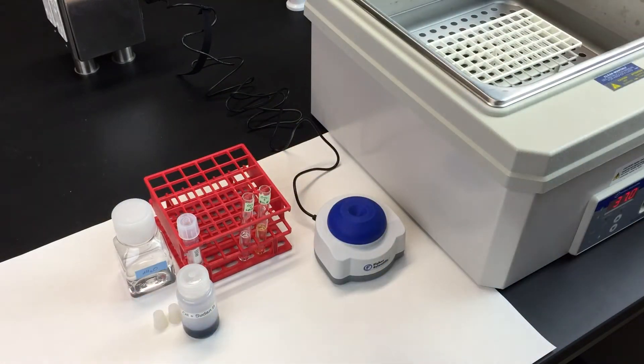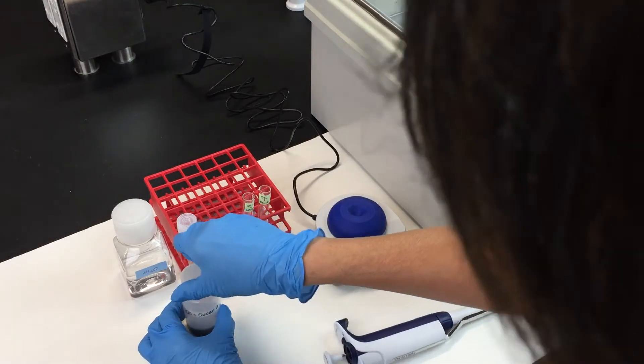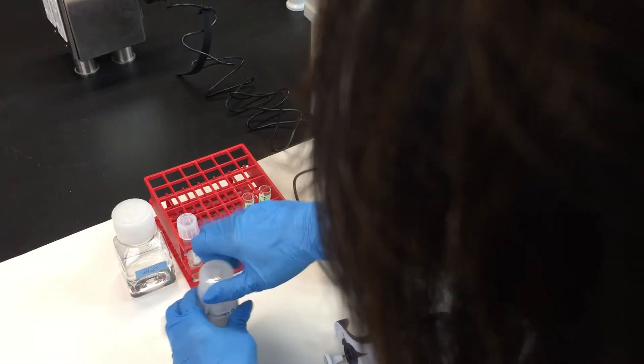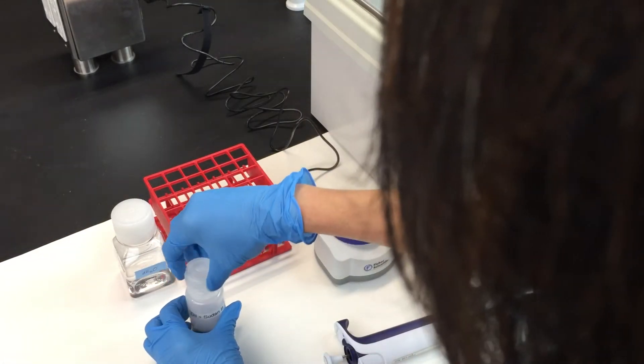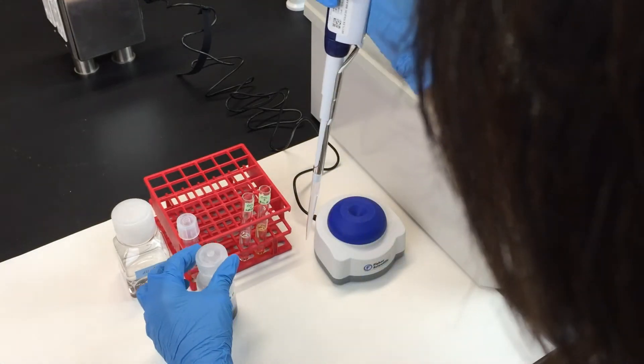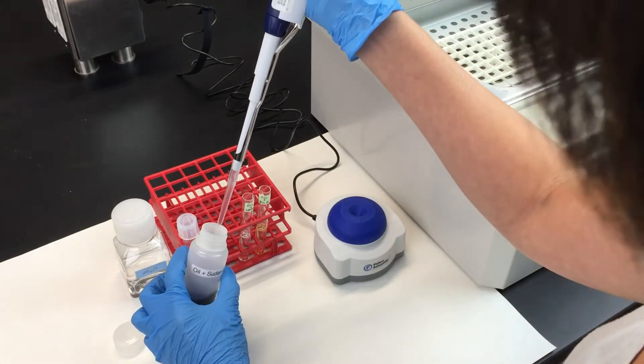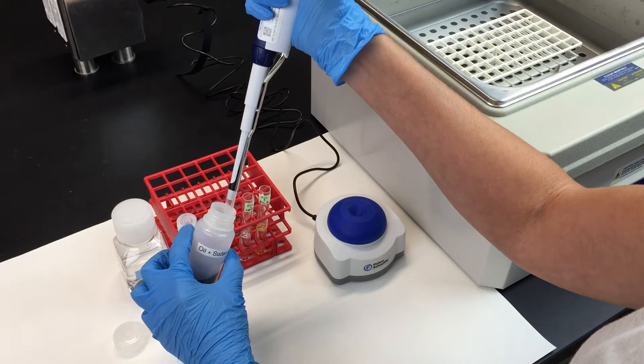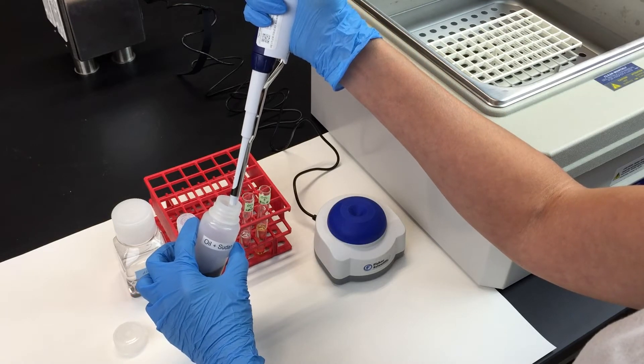Now add one milliliter of Sudan B dyed oil to each test tube. Sudan B is a dye that's used to help make the oil droplets easier to see. When pipetting the oil make sure you go slowly because the oil is very viscous.